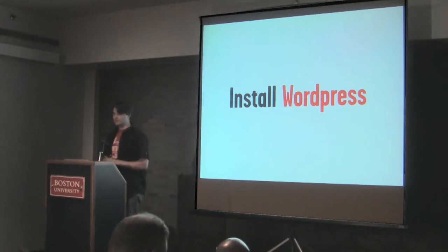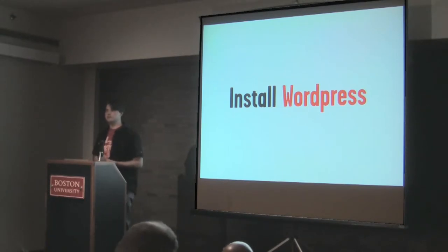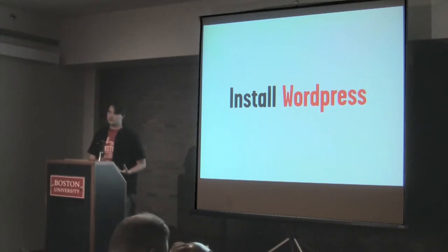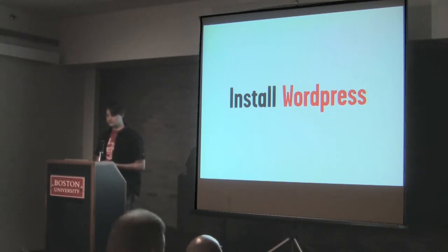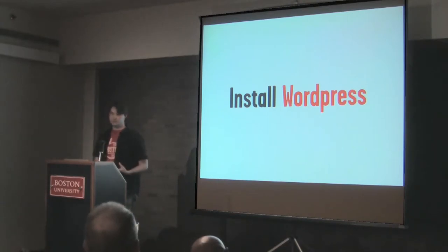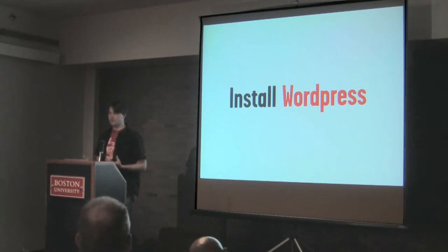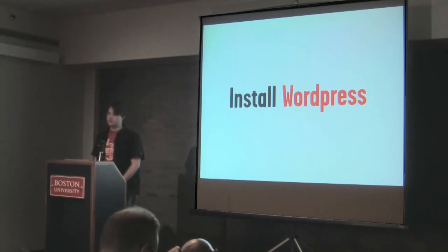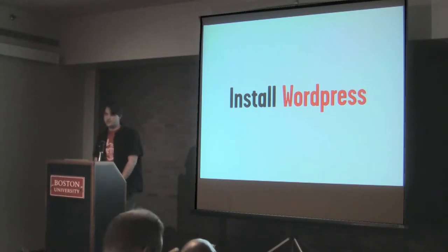Once we get our web server up and running — which is pretty much downloading those programs, reading the instructions, and running it — we want to install WordPress. Installing WordPress locally is going to be very similar to doing it remotely: download WordPress, create a directory on your local computer, copy the files over, then create your WordPress database. You can do this through phpMyAdmin, which is installed with MAMP and WAMP. That lets you create your database in two steps. Then edit your wp-config file, put in your local host as your computer and the username and password — which is root for the default MAMP install — and you're up and running. Even the first time, this is all pretty much a ten-minute process.